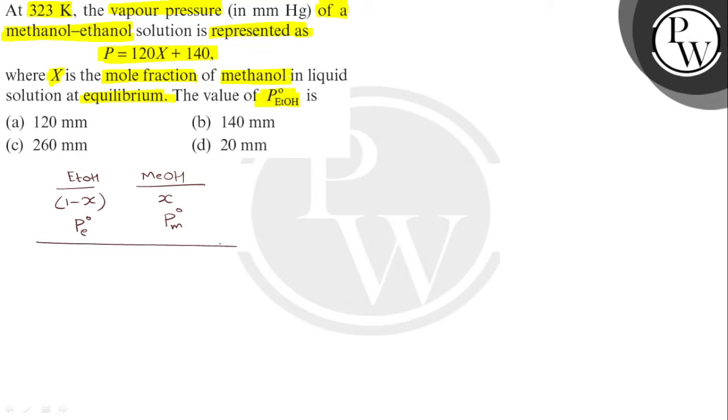What should be total pressure? Pressure of this solution must be 1-x into P0-e plus x into P0-m. PS equals P0-e minus x into P0-e plus x into P0-m.